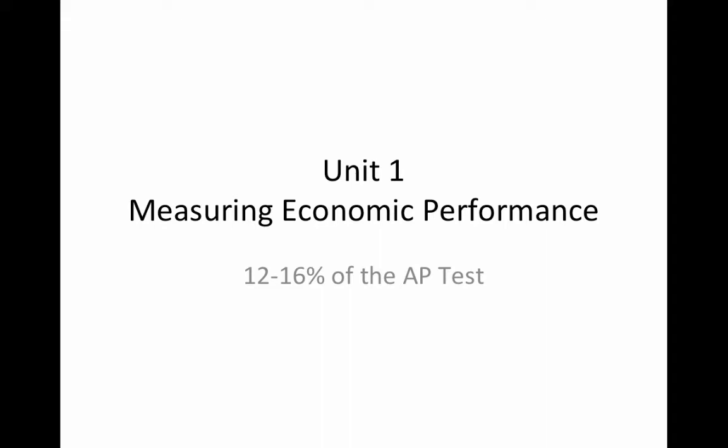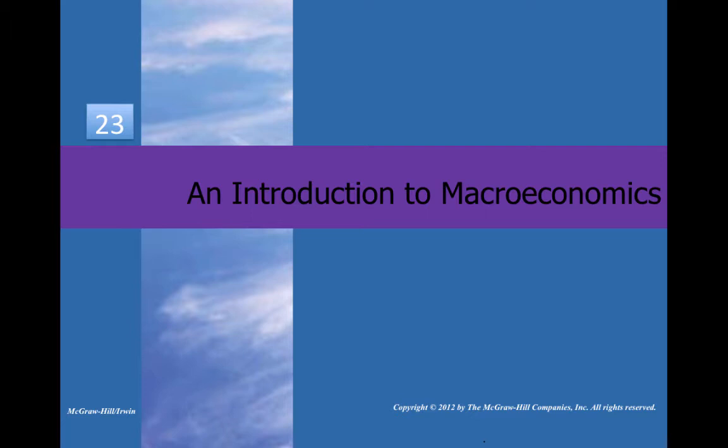All right everybody, welcome to our Unit 1 video. Unit 1 is about 12 to 16% of the AP test, as you can see here. There is sort of a Unit 0, which is the same as what we started with — supply and demand, elasticity, that sort of thing last semester. We don't cover that this semester. It's going to cover four chapters, but don't get too intimidated. There's not a ton of depth, and we can get through them pretty quickly. So let's get going.